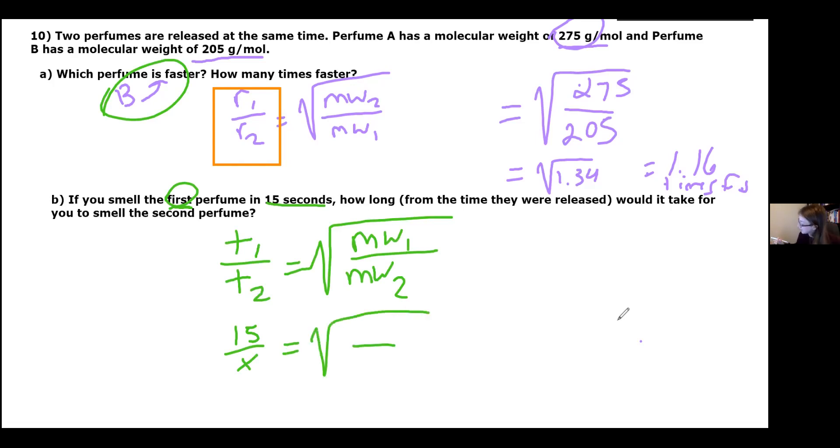What matters is that T1 is for the first perfume. So the faster perfume, its molecular weight needs to go on top. The faster one we already said was B. So in this case, we're actually putting 205 on top because 15 seconds is how long it took for the faster perfume. We know that the faster perfume has the smaller molecular weight, and 275 goes on bottom.